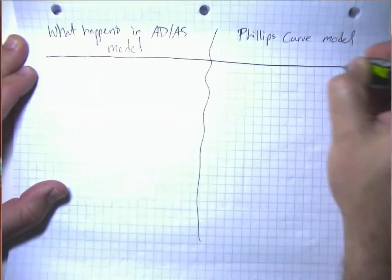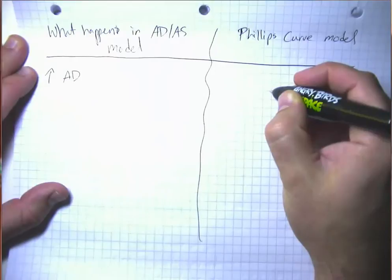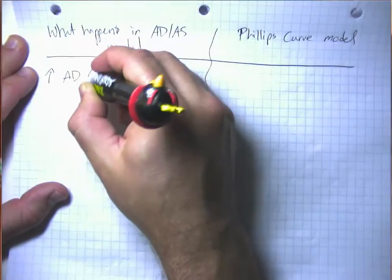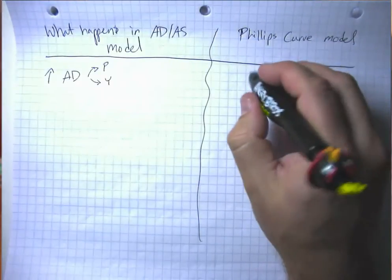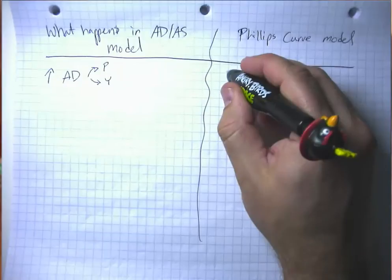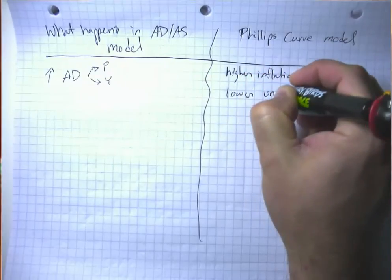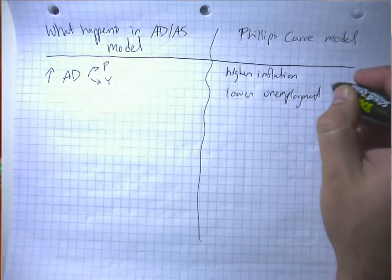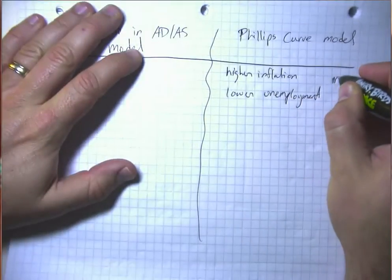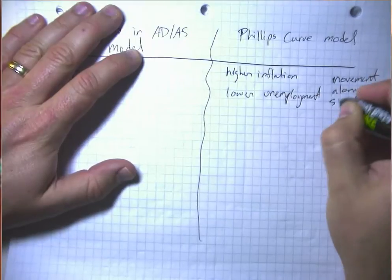So if we have an increase in aggregate demand, that's going to mean higher prices and higher output. And in the Phillips curve model, that translates as higher inflation and lower unemployment. So that is a movement along the short-run Phillips curve.